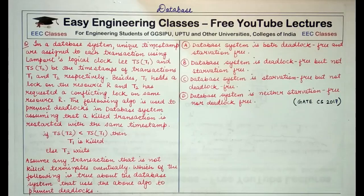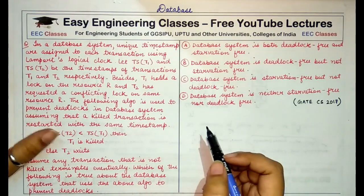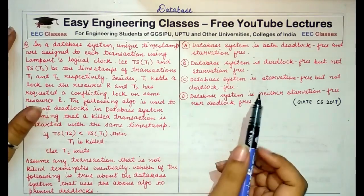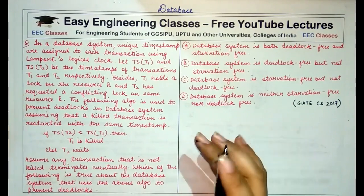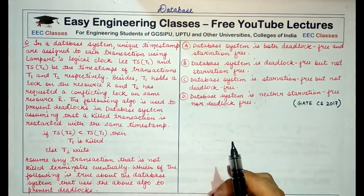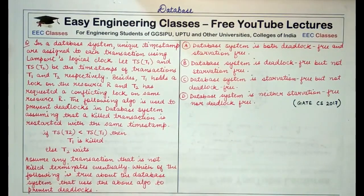Hey guys, welcome to Easy Engineering Classes. We are continuing with our preparation series on GATE UGC NET computer science related subjects. We are doing all these questions subject-wise to help you in your exams. Today we'll solve a question on database management system about timestamps, deadlocks, and starvation.